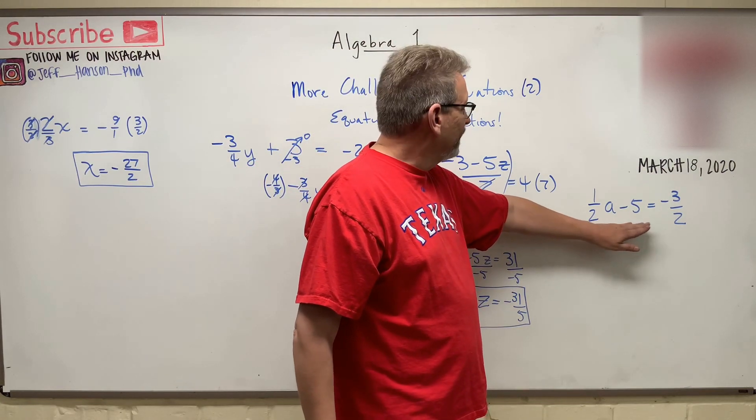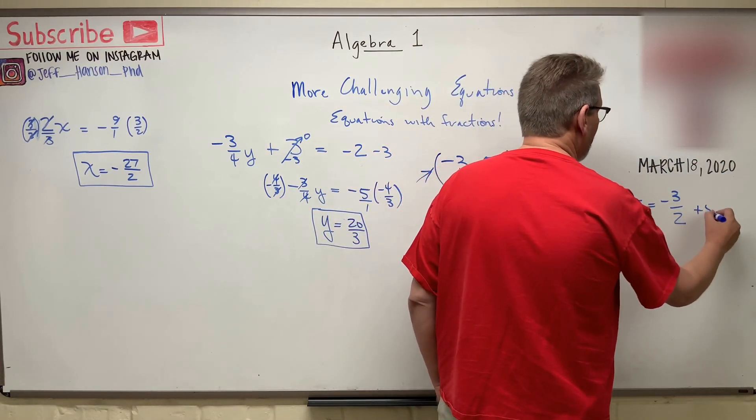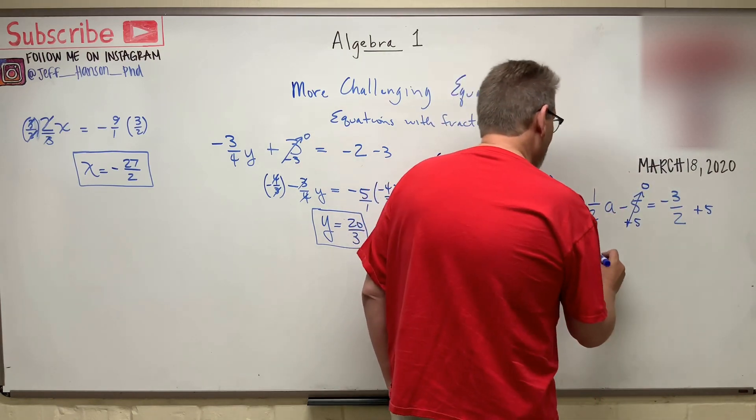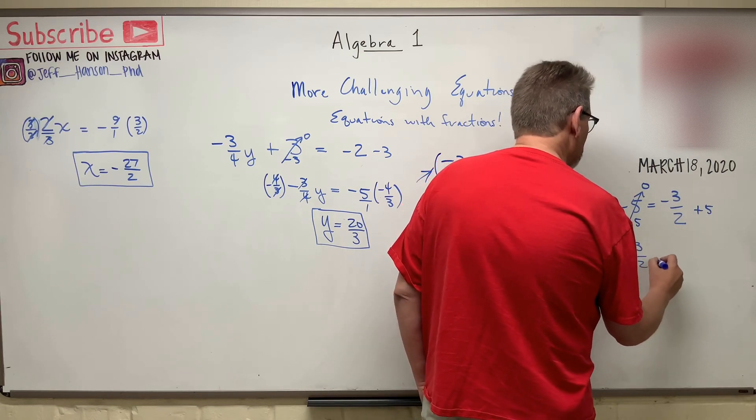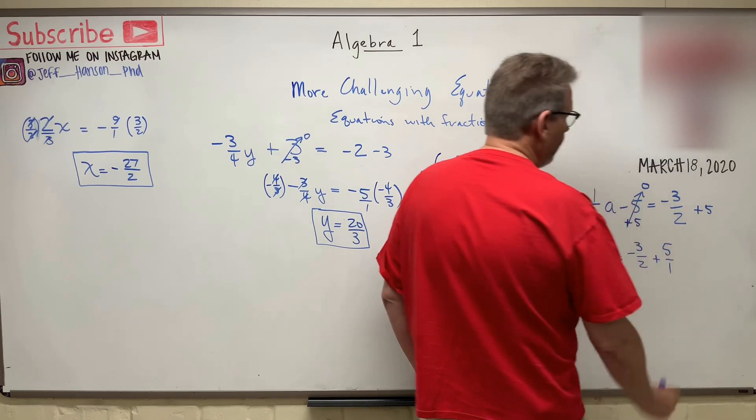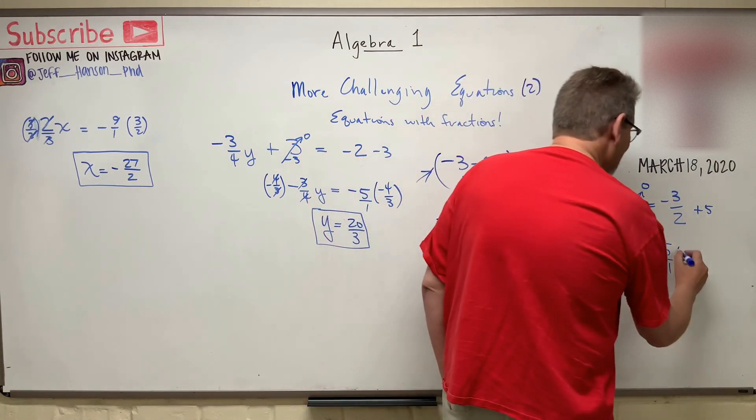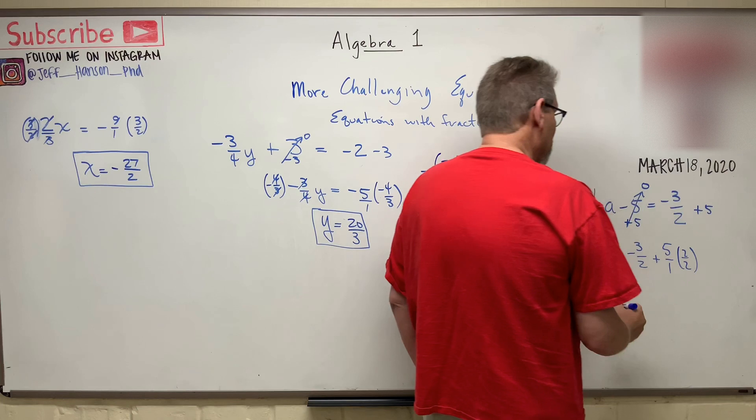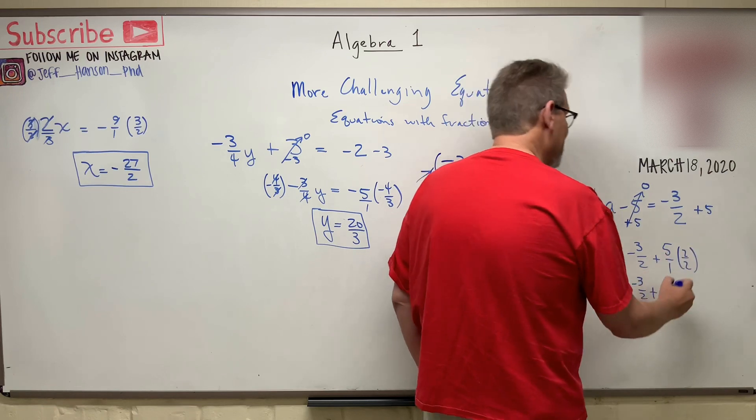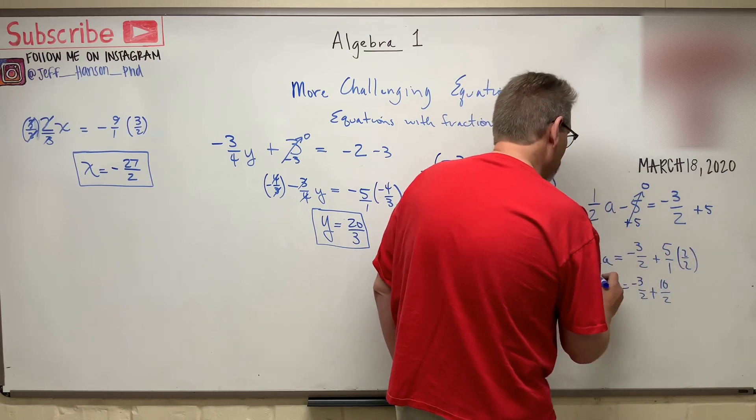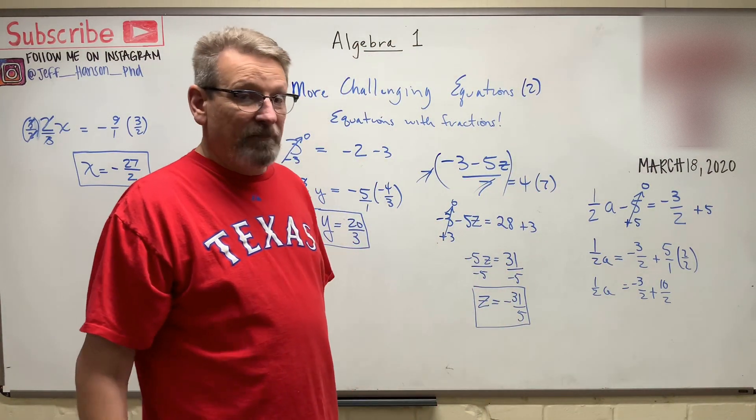One more step, gang. How do I get rid of this guy? How about we add five to both sides. So that whole thing there goes to zero. So now I have one half a is equal to negative three over two plus five over one, right? I'm just going to put a one there. I've got to have a common denominator. So I've got to multiply this guy by two over two. And so that would give me negative three halves plus five times two is ten. Ten halves equals one half a.